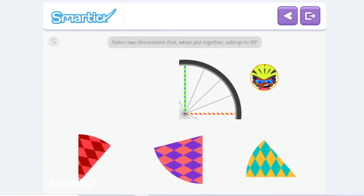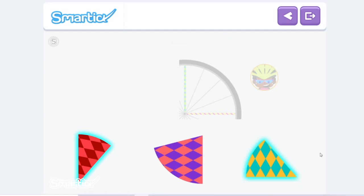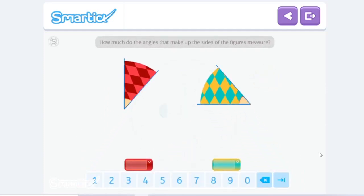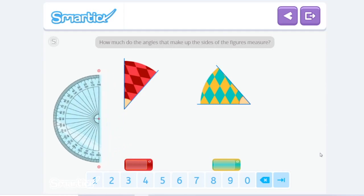Select two decorations that, when put together, add up to 90 degrees. I think this one and this decoration. Nice job! Let's try it. How much do the angles measure? You can use the protractor to help you measure the angles.